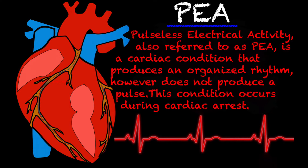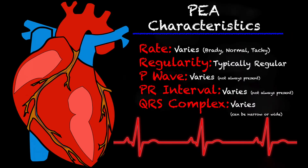The treatment is actually different than other pulseless rhythms like ventricular fibrillation or pulseless VTAC, and more like asystole — but we'll get more into the treatments in a moment. Going into some of the characteristics of PEA, it gets a little tricky. Your rate is going to vary — it could be brady, it could be normal, it could be tachy. But the one underlying thing that's always going to be the same with pulseless electrical activity is the fact that it doesn't have a pulse.